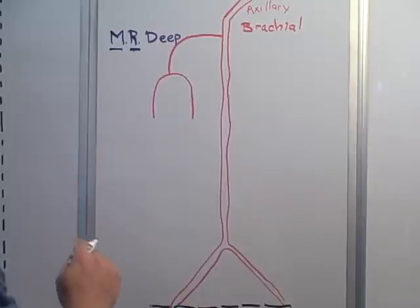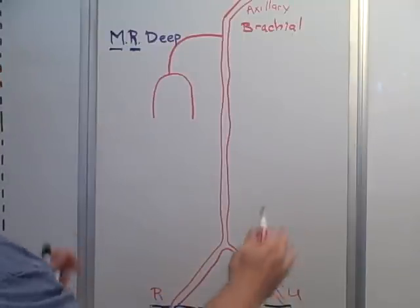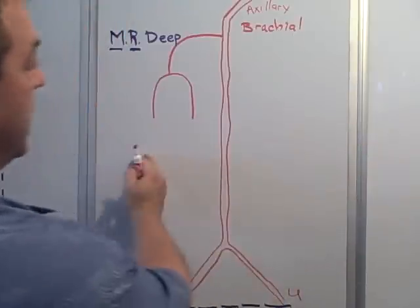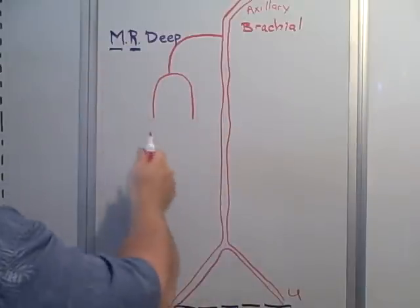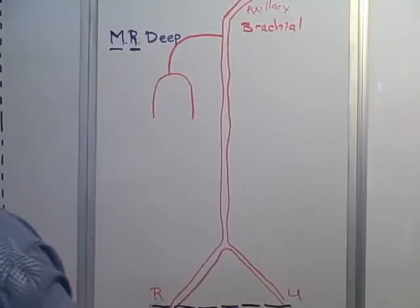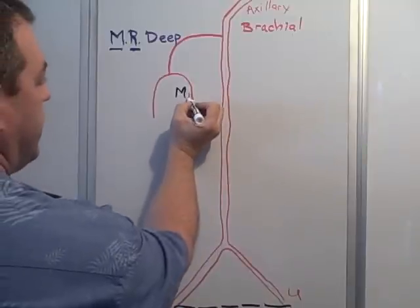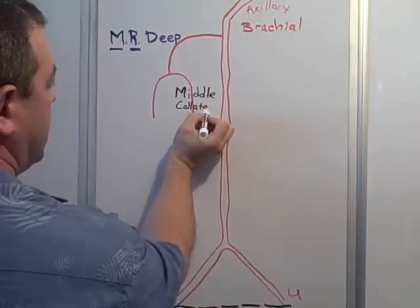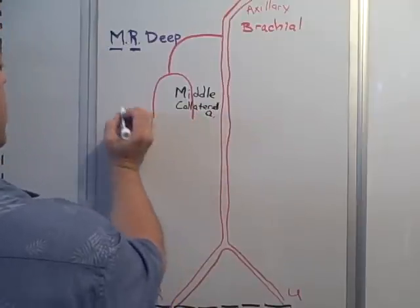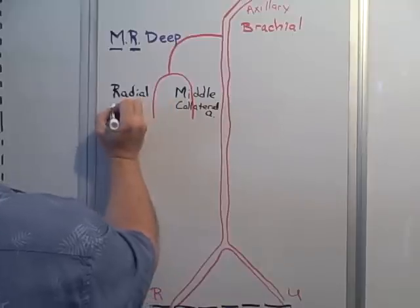We'll make use of M and R. The way I have this drawn, this is the radial artery here and the ulnar artery here — we're looking at a right arm, so this would be medial and this would be lateral. The acronym M and R goes from medial to lateral: M stands for the middle collateral artery, and R stands for the radial collateral artery.